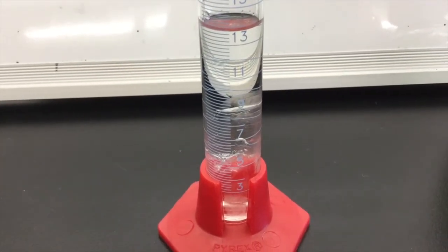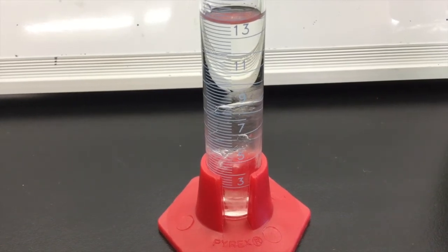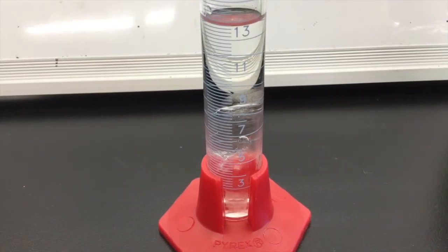Notice that the ice has sunk to the bottom of the graduated cylinder. What does this tell you about the density of the ice relative to the density of hexanes?